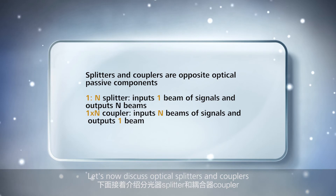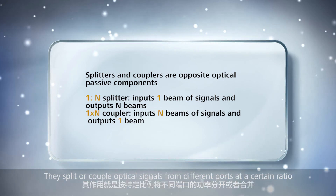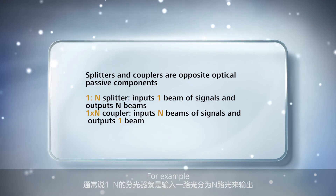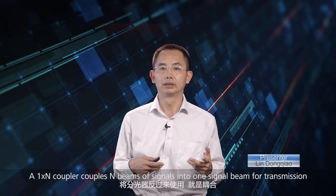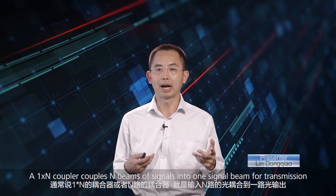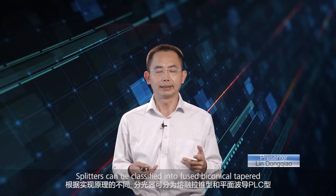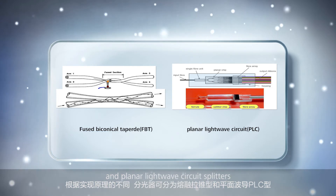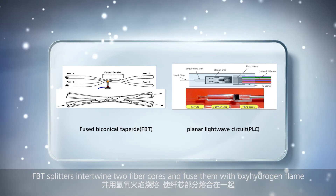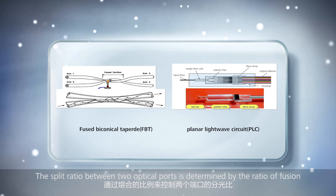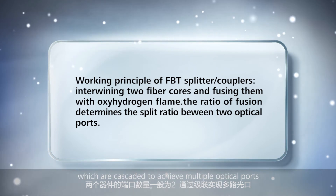Let's now discuss optical splitters and couplers. They are passive components with opposite functions — they split or couple optical signals from different ports at a certain ratio. For example, a 1-to-N optical splitter splits one signal beam into N beams for transmission, while a 1-by-N coupler couples N beams of signals into one signal beam. Splitters can be classified into fused biconical tapered (FBT) and planar lightwave circuit (PLC) splitters. FBT splitters intertwine two fiber cores and fuse them with an oxy-hydrogen flame; the split ratio is determined by the ratio of fusion. Splitters and couplers usually have two ports, which are cascaded to achieve multiple optical ports.